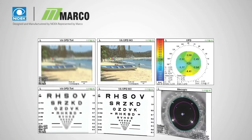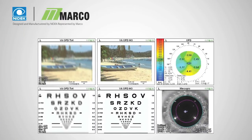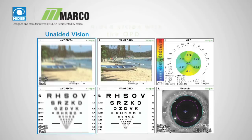Extremely important is the ability to show patients their vision without correction and after correction with the ETDRS chart or beach scene chart, validating to the patient the need for new glasses compared to their uncorrected vision.